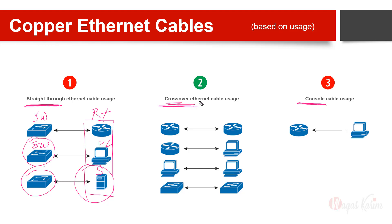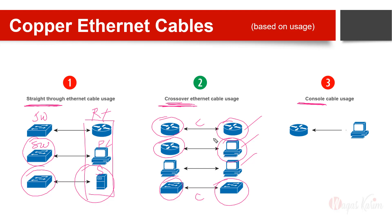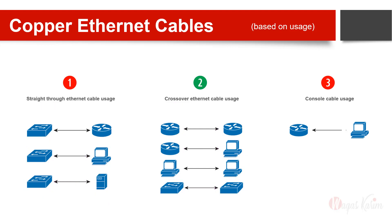The second type is called crossover cable. Crossover cable is used when both sides of the cable have the same type of device. For example, router to router — crossover. Switch to switch — crossover. Since routers, computers, and servers are the same category of devices, router to computer is also a crossover cable. PC to PC — crossover. Switch to switch — crossover.